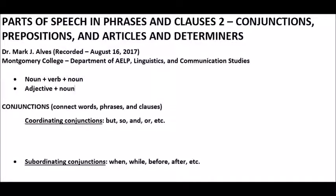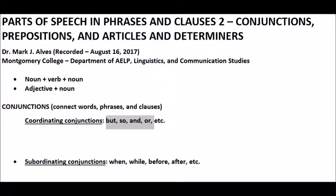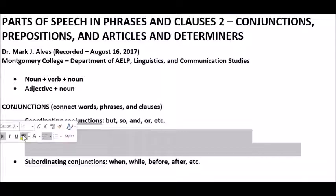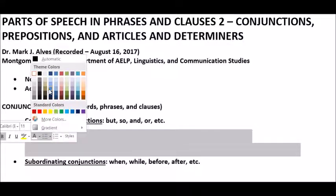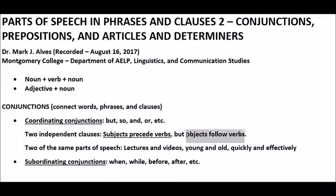Now let's turn our attention to conjunctions, prepositions, and articles and determiners. First, conjunctions connect words, phrases, and clauses. There are two types. There are coordinating conjunctions such as but, so, and, or. These can do two different things. They can connect two independent clauses such as "subjects precede verbs but objects follow verbs," with "but" in the middle connecting those two clauses.